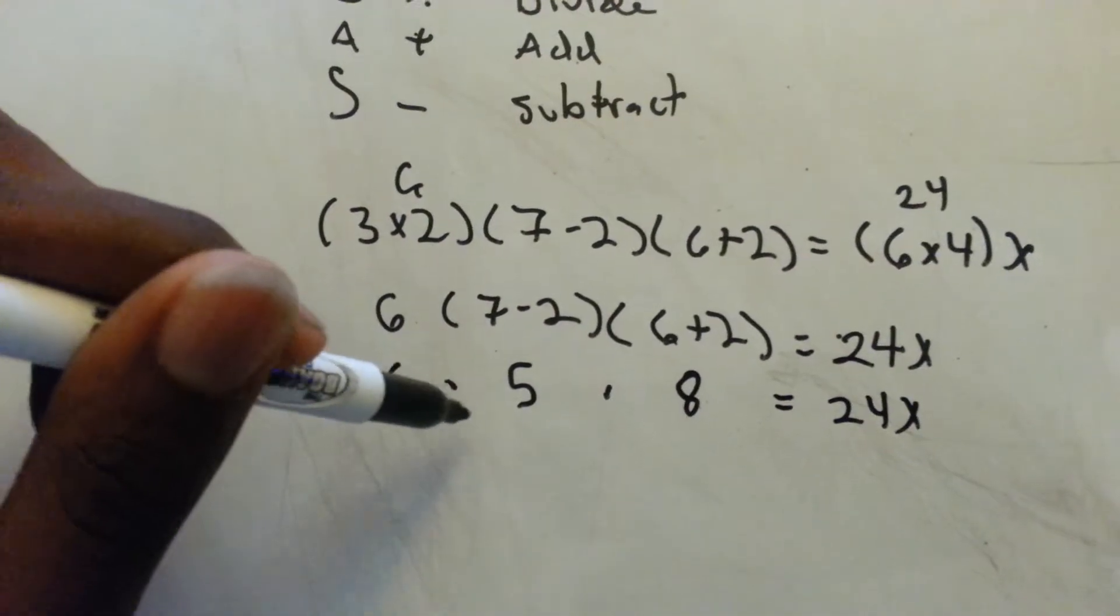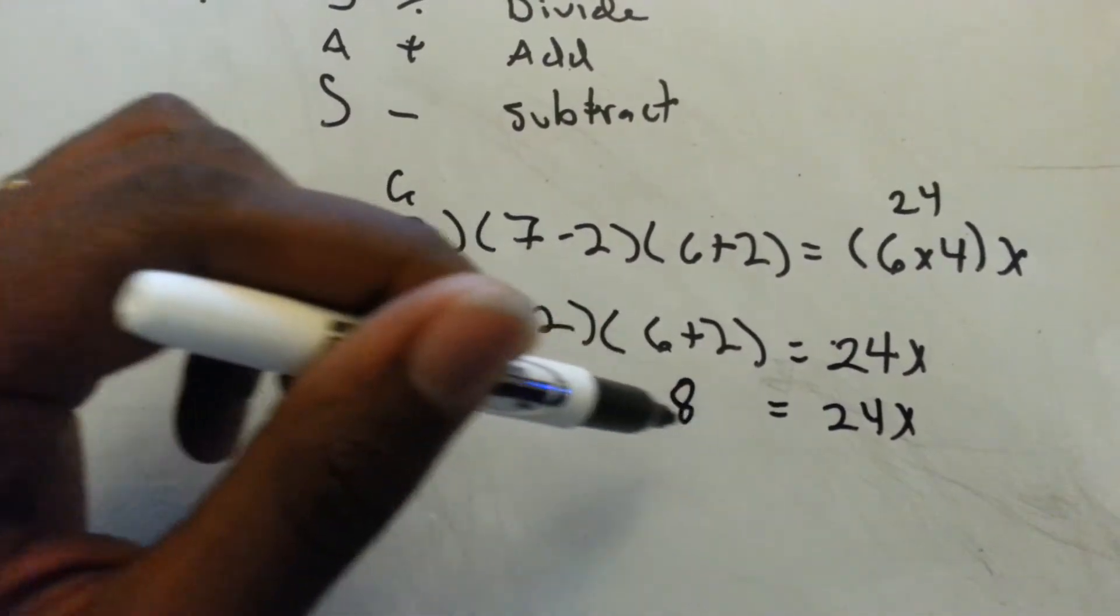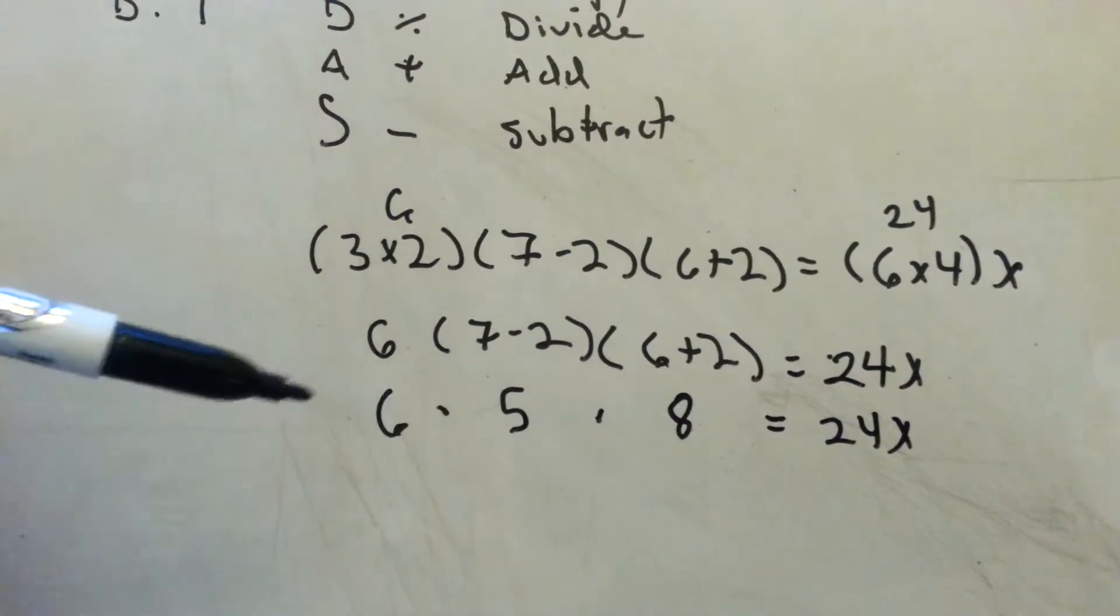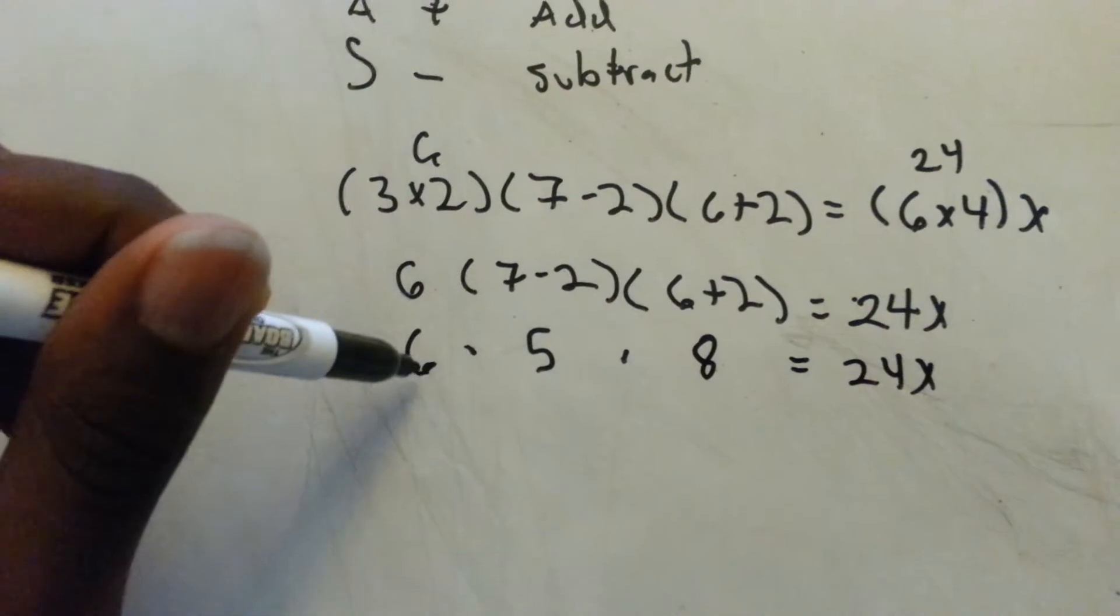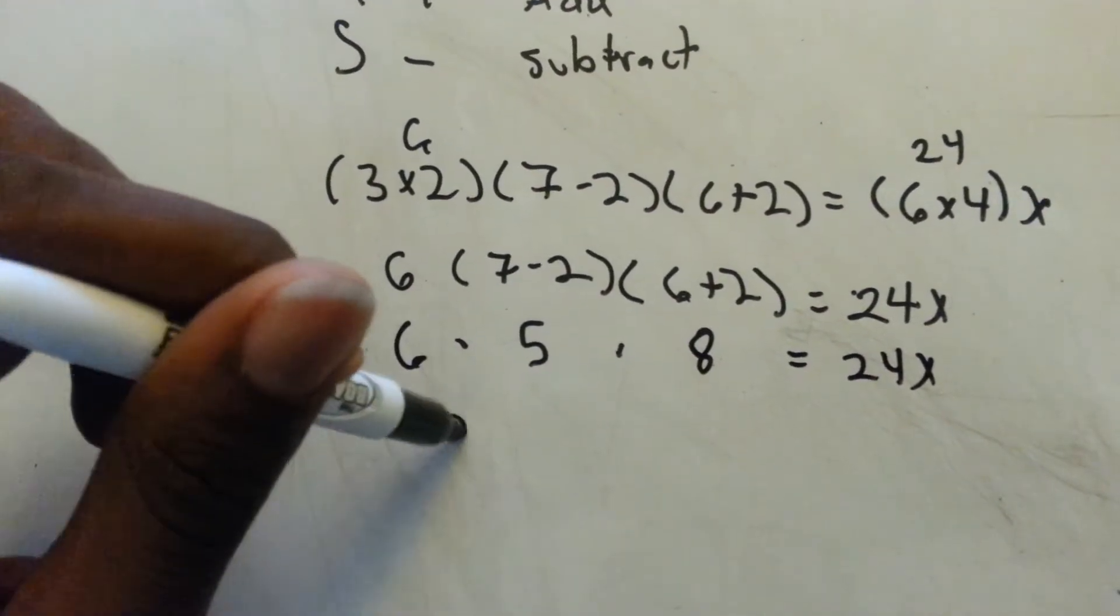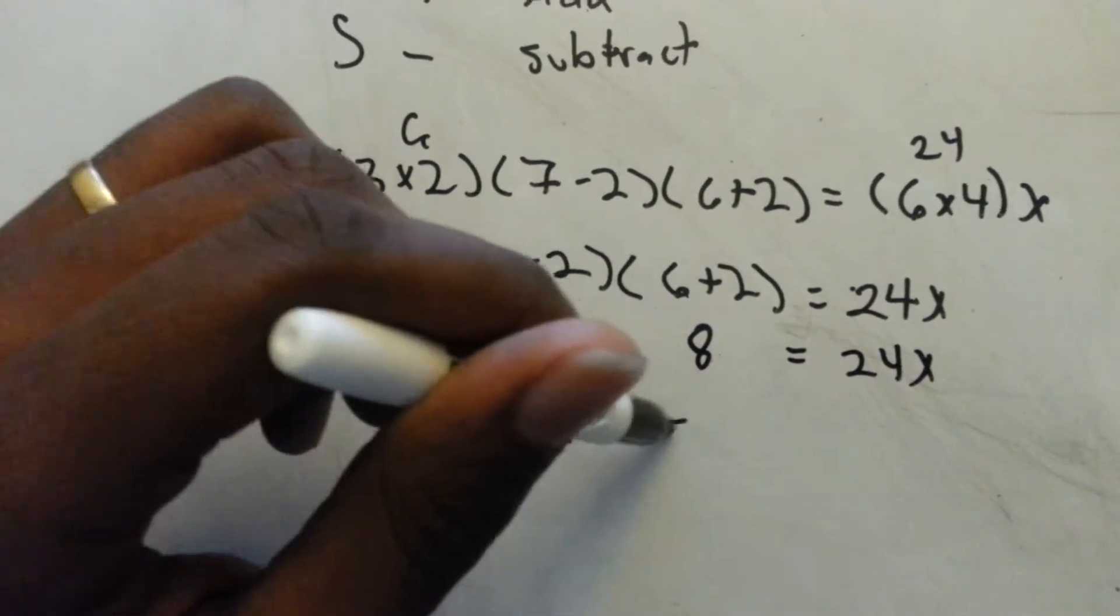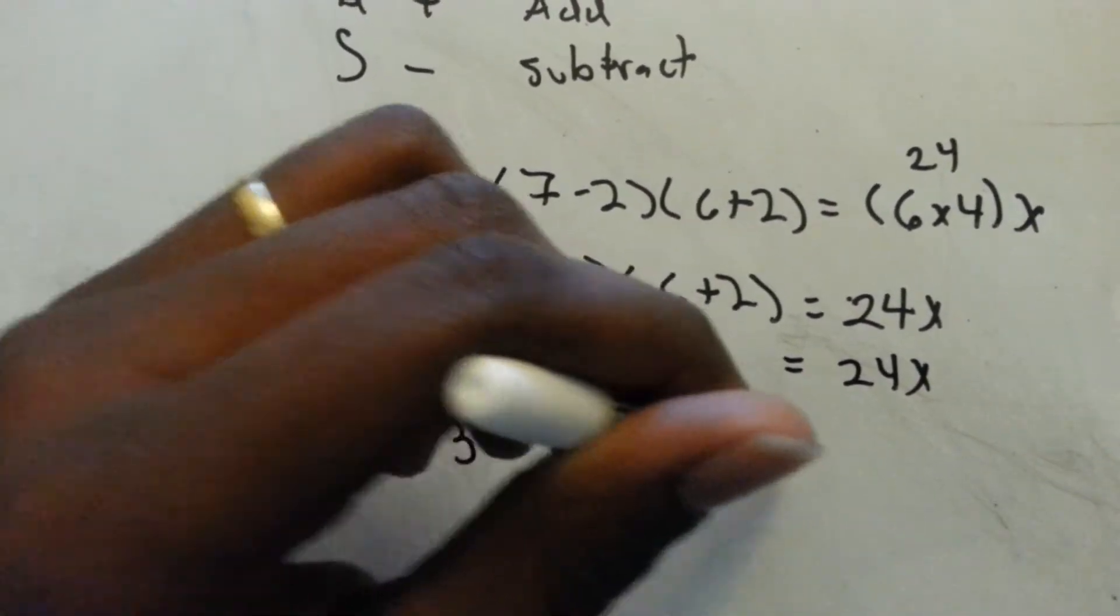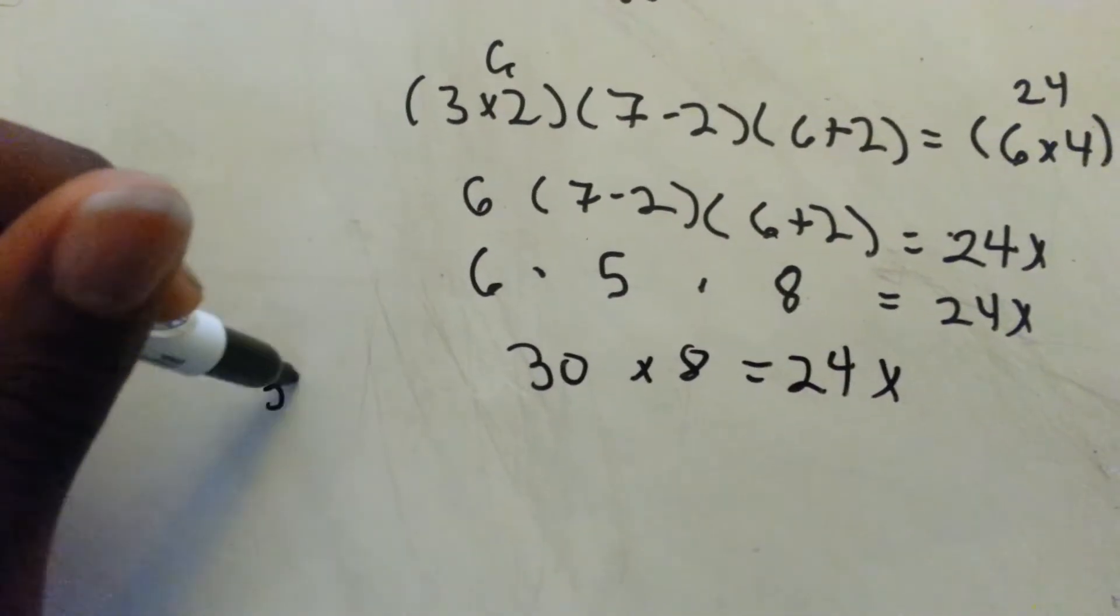So we have six, and then when you have all the same functions, all the same operations, then you just work your way across or to whatever is simplest for you. So we do six times five is 30, times eight equals 24x. And 30 times eight, we'll do over here.